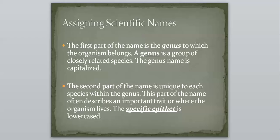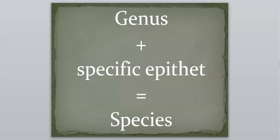Then the second part of the name is unique to each species within the genus, and this part of the name often describes an important trait or where the organism lives. This is known as the specific epithet, and it is always going to be lowercase. And usually you might see people call this the species name, however, the second name is not known as the species. It's when we put those two names together, that is what's going to give us the species. So the genus plus a specific epithet is going to equal the species.